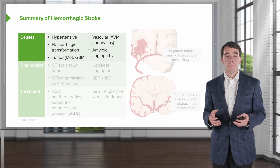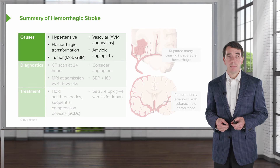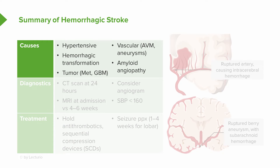When thinking about hemorrhagic stroke, there are also five causes to consider. Hypertensive hemorrhage is the most common cause. Hemorrhagic transformation of an ischemic stroke can occur after an ischemic stroke. Certain brain tumors — including brain metastases and primary gliomas — can hemorrhage. Vascular malformations including arteriovenous malformations and aneurysms can burst and bleed. Finally, amyloid angiopathy is a degenerative condition associated with amyloid dementia, leaking blood vessels, and a risk of lobar hemorrhage.